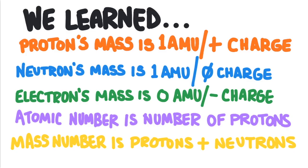In this video, we learned that a proton has a mass of 1 AMU and it has a positive charge. A neutron has a mass of 1 AMU and it has no charge. An electron has a mass of 0 AMU and it has a negative charge.